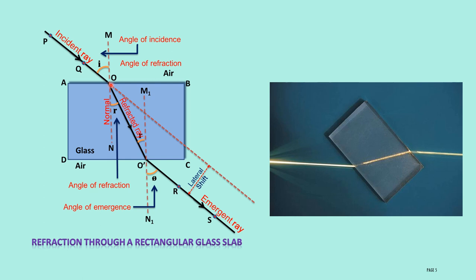When it hits at point O, you can see the difference in the medium — here, air is the medium; here, glass is the medium. When any light ray enters from one medium to another medium, due to the difference in speed of light, it will get bent. Bending of light takes place — it gets refracted. O to O-dash is the refracted ray. The normal MN is drawn perpendicular to the glass slab surface AB.